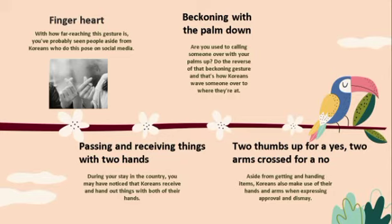Passing or handing things with two hands: during your stay in Korea, you may notice Koreans using both hands when giving or receiving items. This represents respect. Additionally, two thumbs up means 'yes,' and two arms crossed means 'no.'